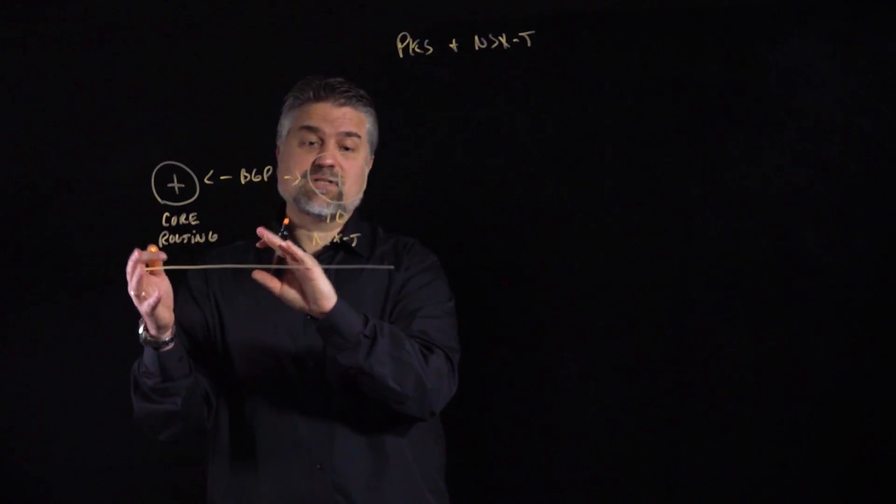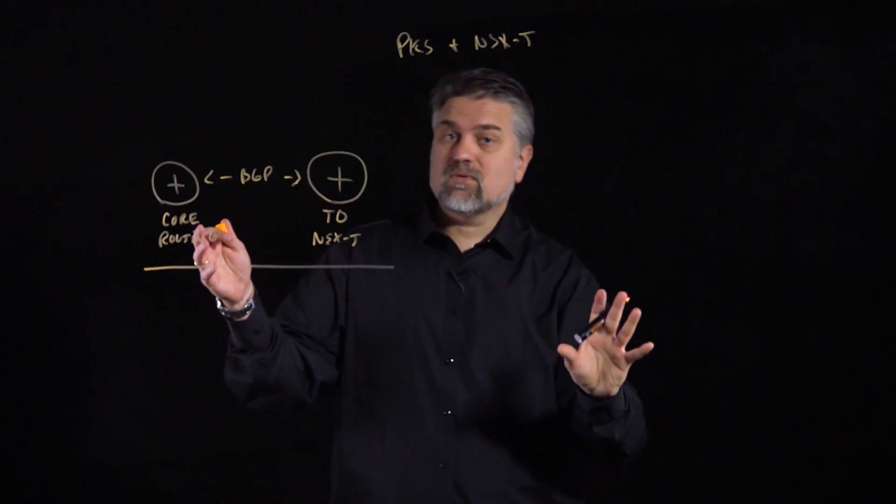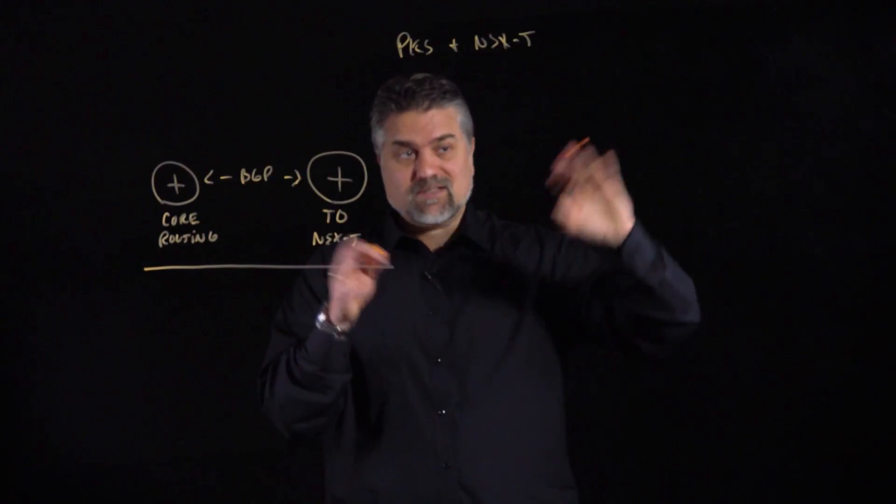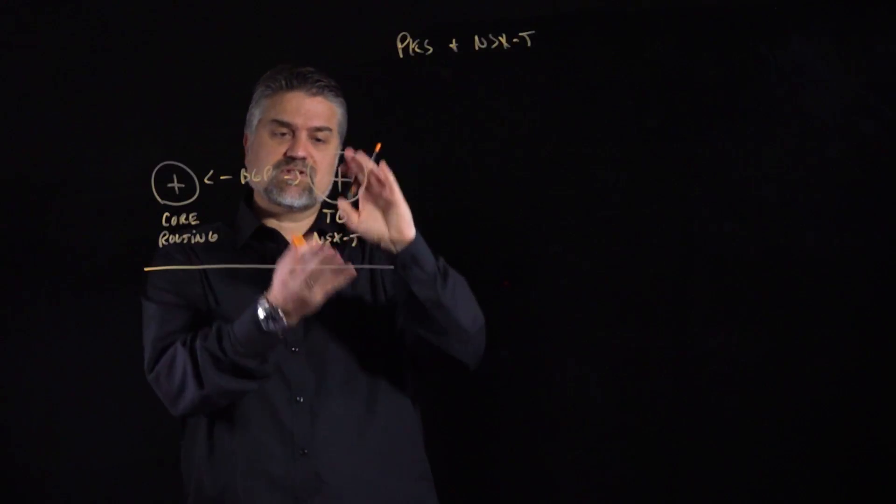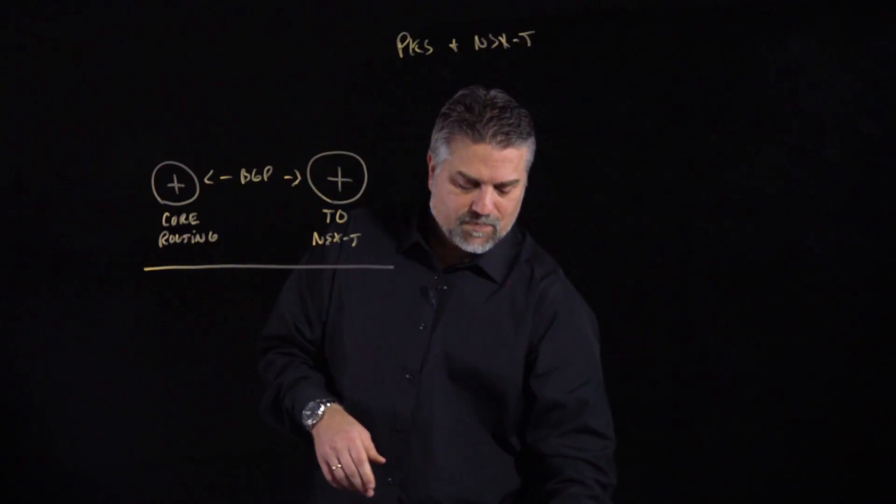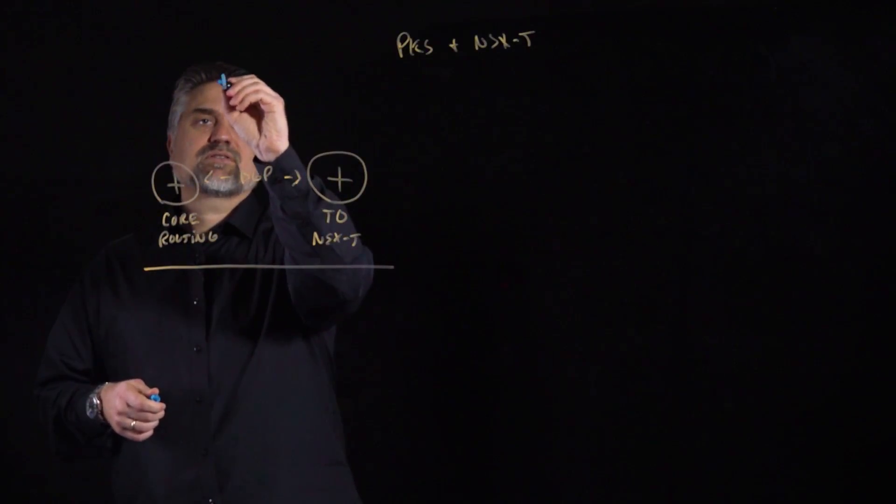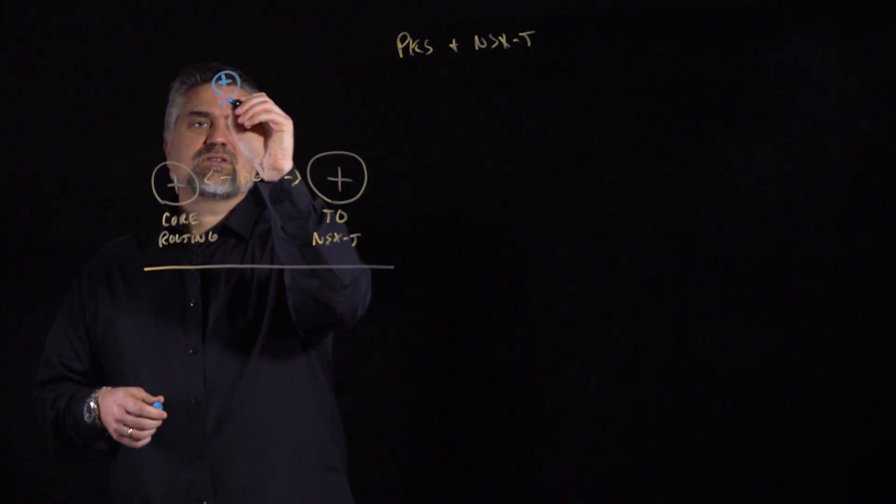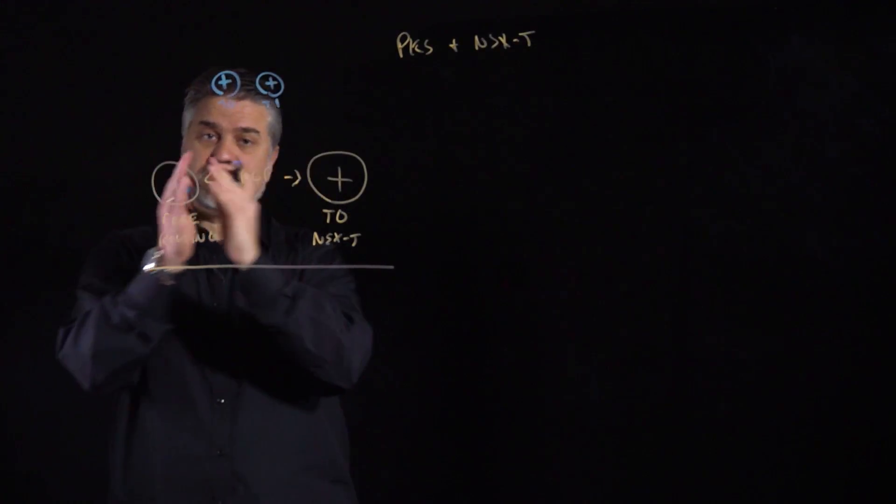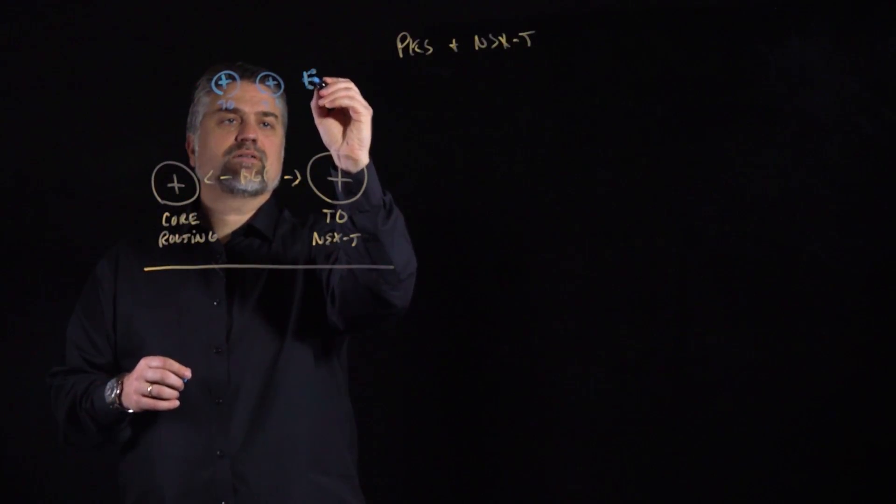This is going to allow us to ingress and egress from all of the various Kubernetes clusters that we're going to be deploying with PKS. We're going to drill into a single cluster, but bear in mind that we can have multiple clusters all coming through this T0. Now, the way this T0 is implemented, we're going to be talking about a couple of NSX-T constructs. One of those is the T0. We're also going to be talking about a T1, which is a secondary tier router, and we're also going to be talking about load balancers.